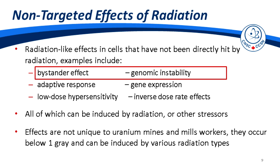Non-targeted effects can be induced by radiation or other stressors and are not unique to uranium mines and mills workers. These effects, often referred to as low dose effects, occur below one gray — essentially equivalent to 1,000 mSv — and can be induced by different types of radiation, including alpha particles, x-rays, and gamma rays. This presentation will focus on the bystander effect and genomic instability.